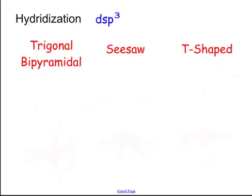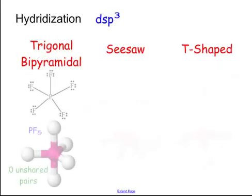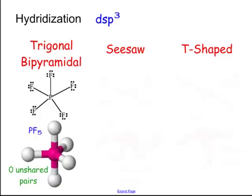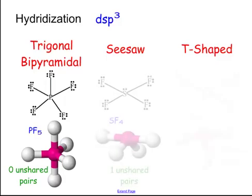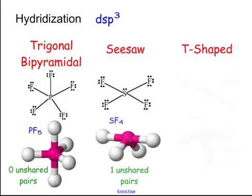I do want to show you these though. This is the trigonal bipyramidal, something like PF5. You can see there's zero unshared pairs, and it looks like two triangle pyramids if you put up some sides on that guy. Seesaw would be something like SF4, sulfur tetrafluoride. There's one unshared pair, and it makes it into this kind of weird shape of, it looks like a seesaw, right? Seesaw.